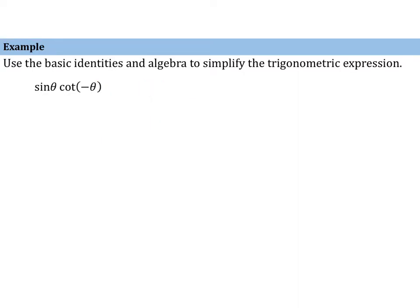Now let's look at sine of theta times cotangent of negative theta. If we look at cotangent of negative theta, it will be beneficial to remember that cotangent is an odd function. Odd functions have this property.